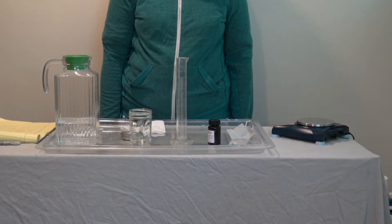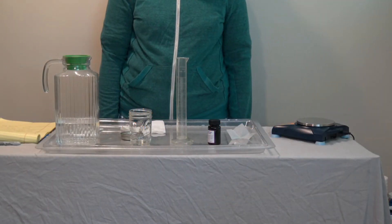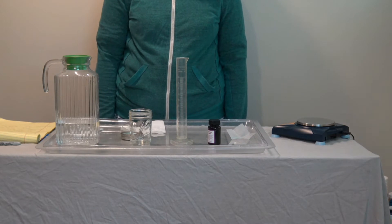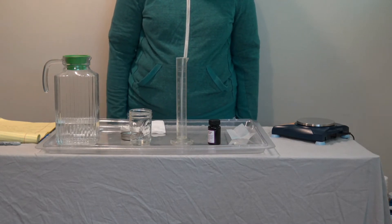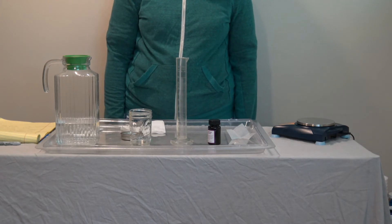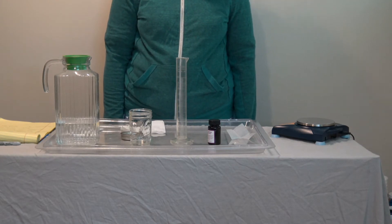In this lesson, Group F will be using a cabbage juice indicator solution as part of their chemical process. For one class, you will need to prepare 100 milliliters of cabbage juice solution.